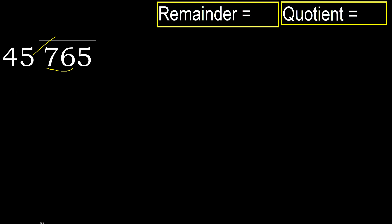45 multiplied by 2 is 90, which is greater. Multiply by 1: 45 is not greater, ok. Subtract — remainder is 31.